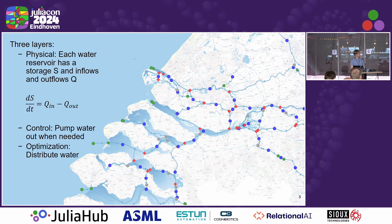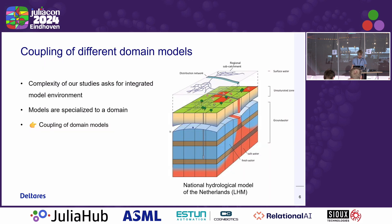In Ribasim we have three layers. We use OrdinaryDiffEq to model the differential equation — the water balance, which is a very simple ordinary differential equation. The model we're building will be quite large; here I show the main distribution network of the Netherlands. We will be controlling on the order of more than ten thousand nodes where we control the water balance. We have separate layers: a control layer implemented using callbacks, and an optimization layer to fairly distribute water between users, using JuMP.